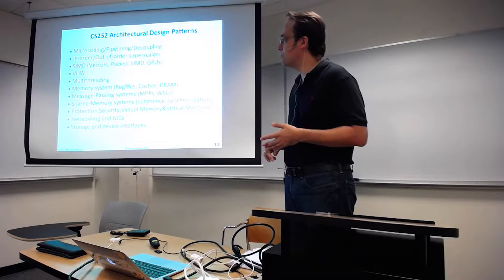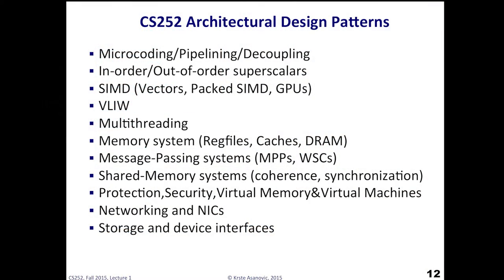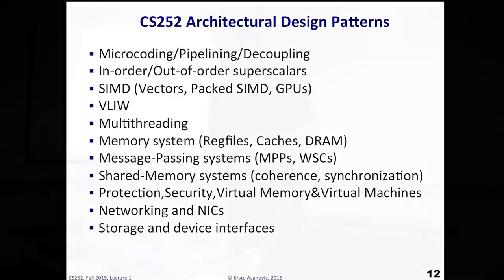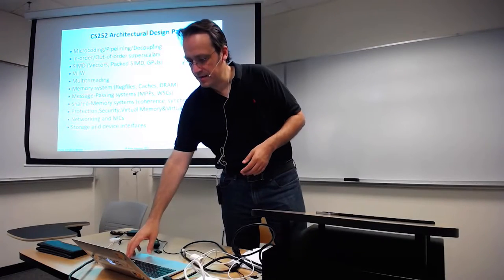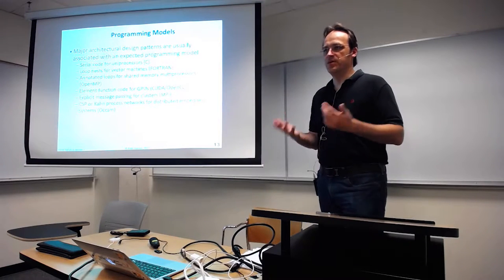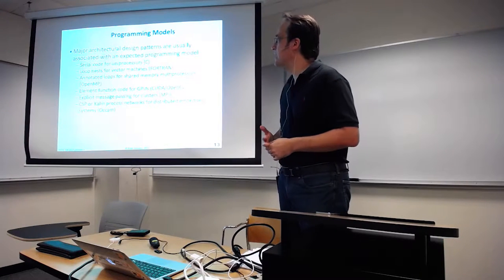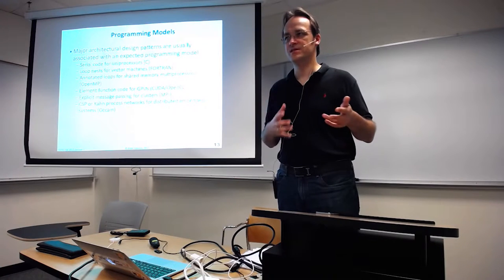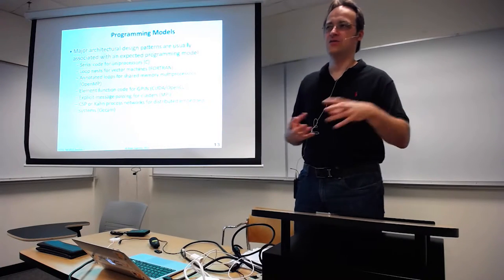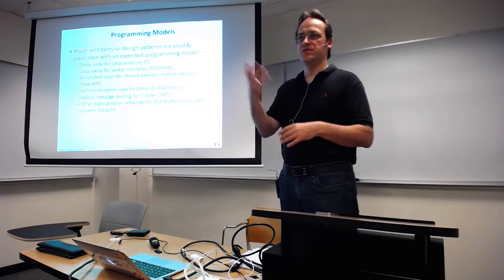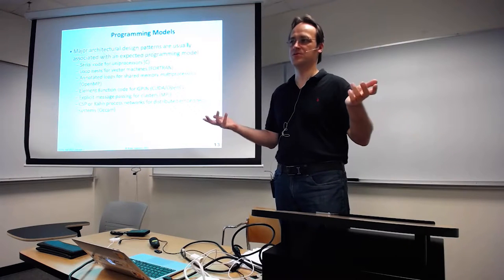Some examples of the architectural patterns we'll cover: microcoding versus pipelining versus decoupling; in-order, out-of-order, superscalar; SIMD in all its incarnations; VLIW; multi-threading; ways to design the memory system; message-passing systems versus shared-memory systems; how protection, security, and virtual machines are implemented; networking and NICs; and storage device interfaces. Each standard way of building an architecture has implications for how you're going to program it — different programming languages have features targeting a given kind of architecture. When you try to use the wrong programming language for a different architectural model, it doesn't always go well.